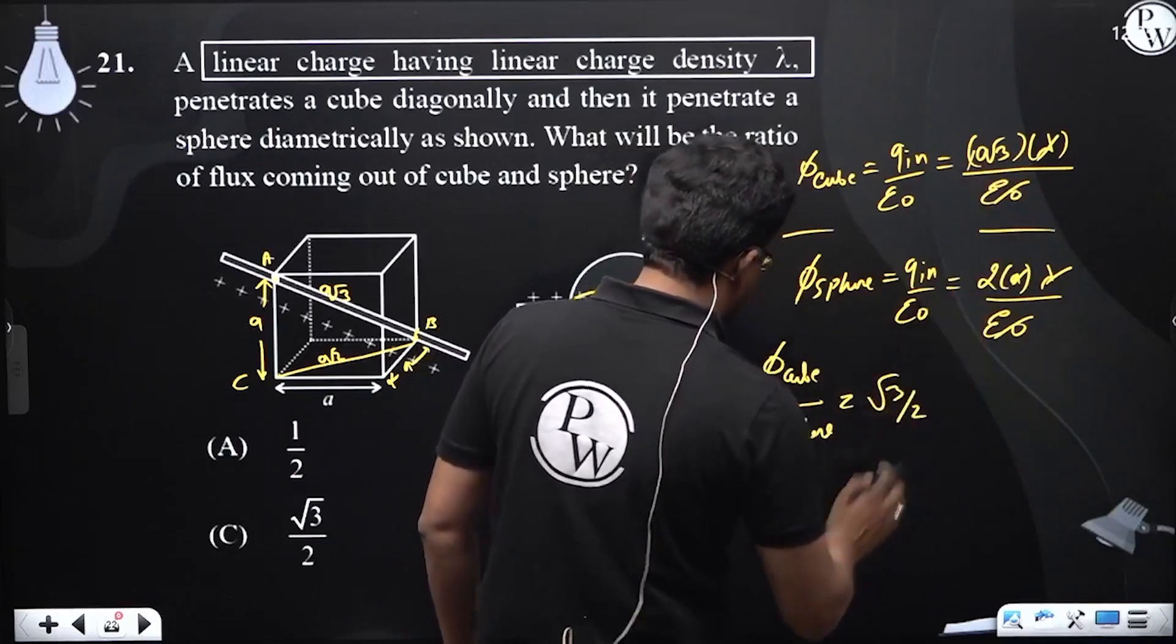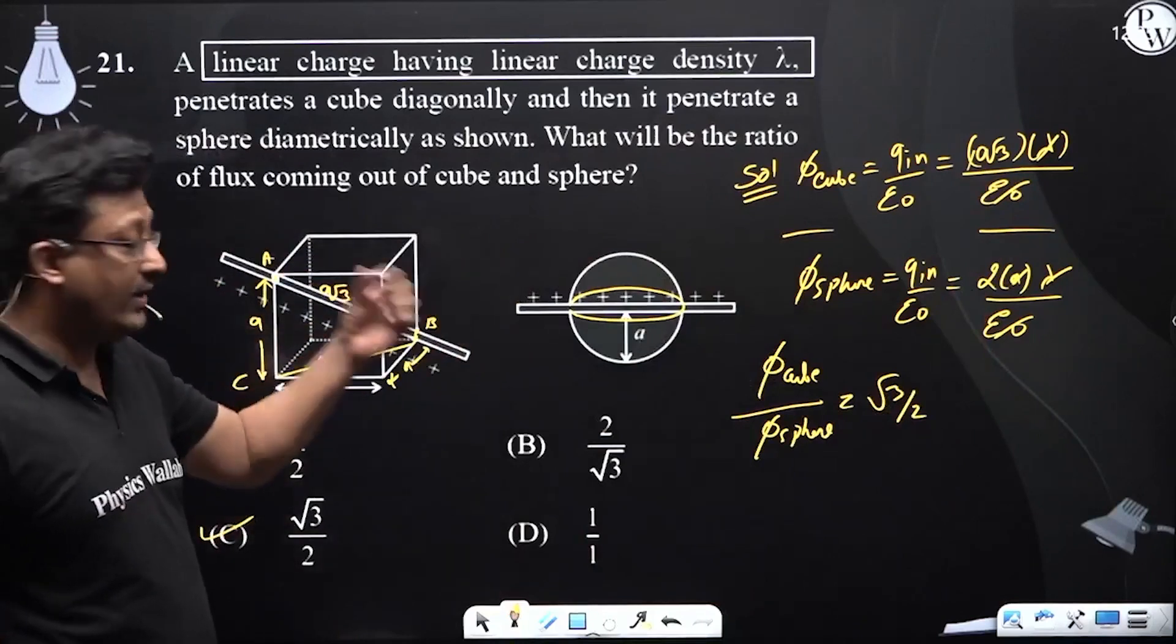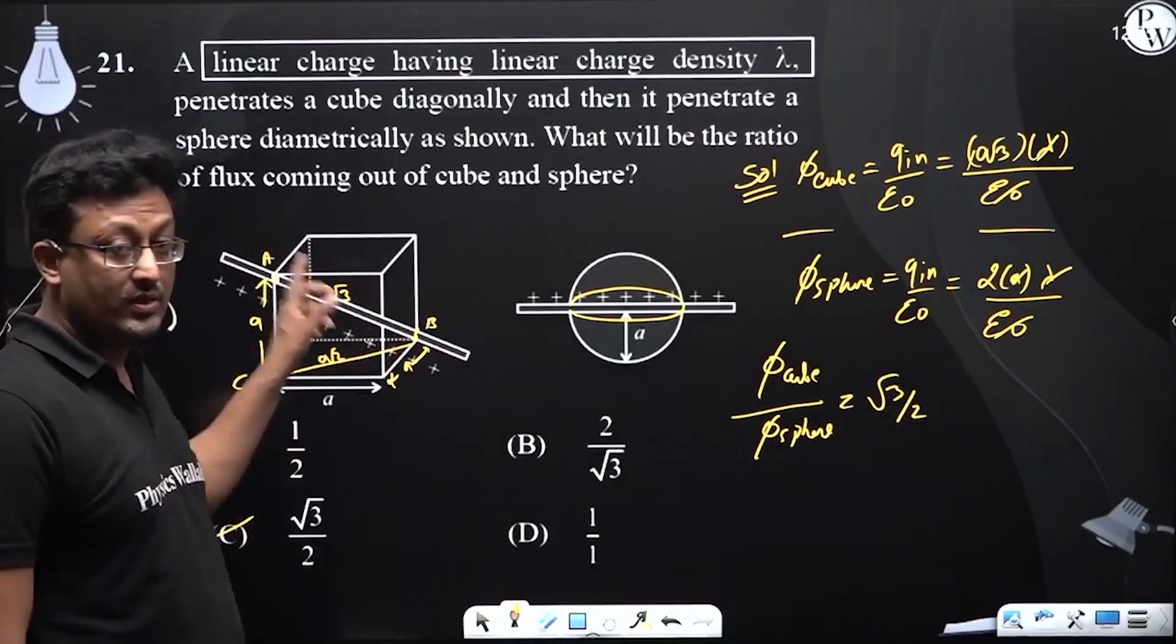So this will be your root 3 by 2. Which option we have? We need to find the lens. Here it becomes a little confusion. Will we take a root 3 or what?